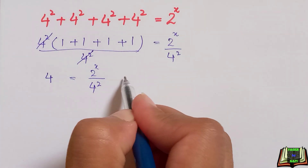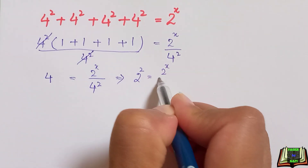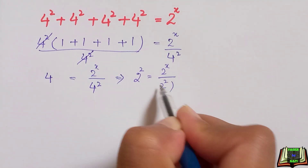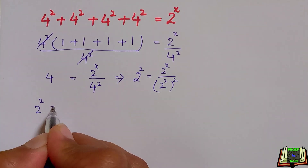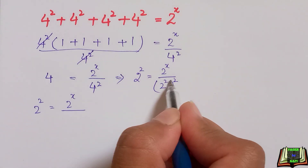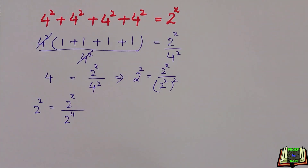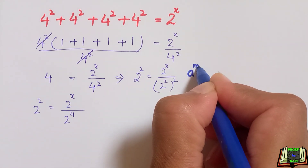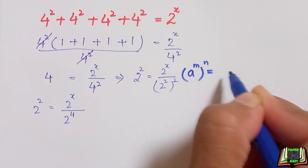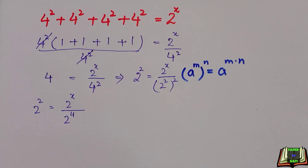We can write 4 as 2 raised to power 2, so we have 2 raised to power 2, raised to power 2, equal to 2 raised to power x over 2 raised to power 2, whole raised to power 2. Multiplying the two powers gives us 2 raised to power 4. We use the power of a power rule here: if a raised to power m, raised to power n, then we can multiply the powers to get a raised to power m times n.